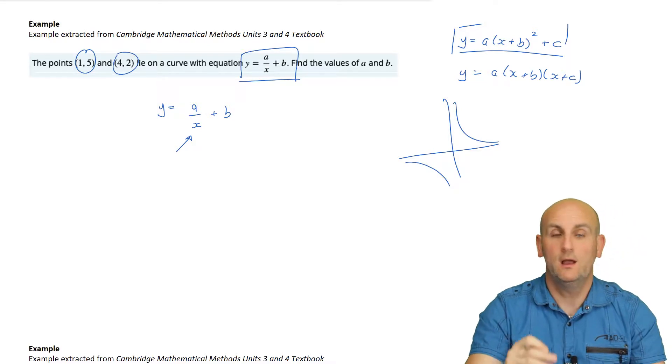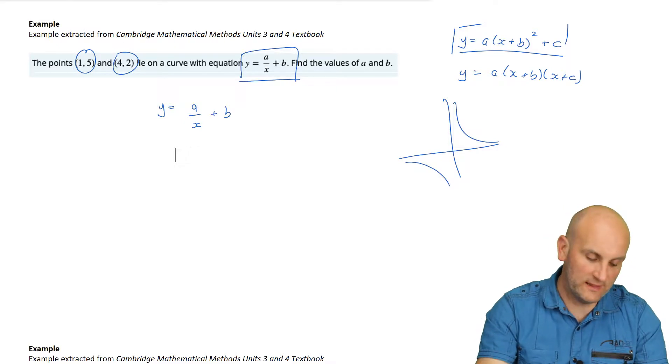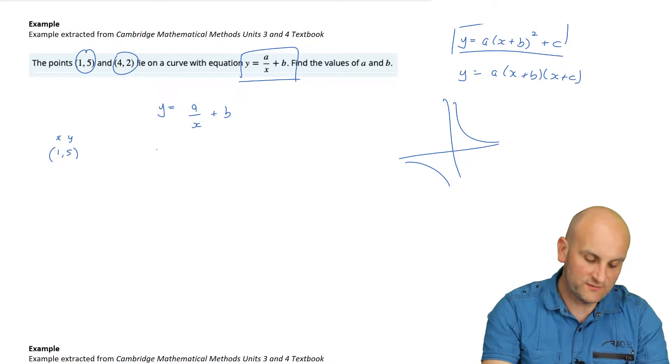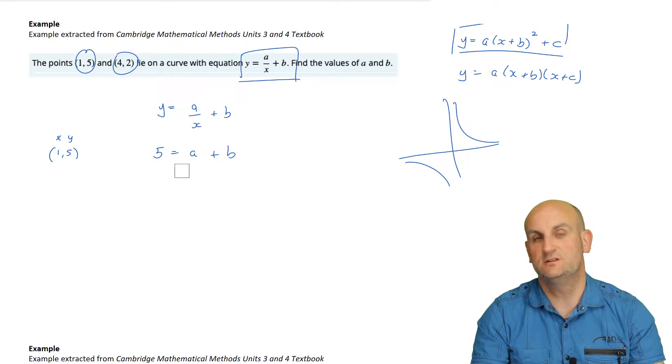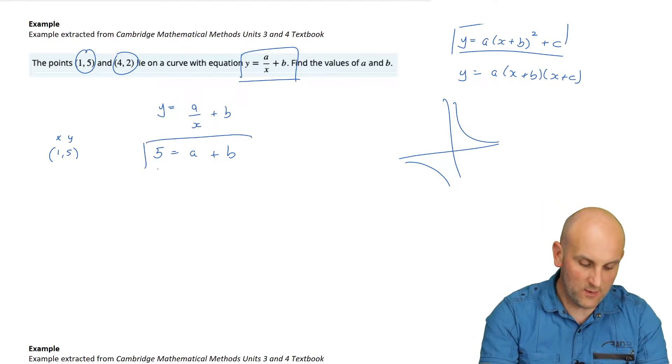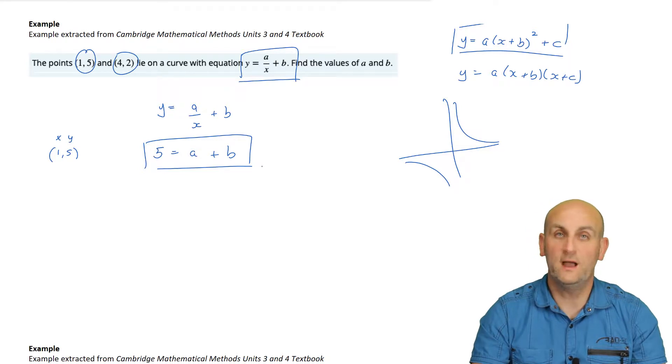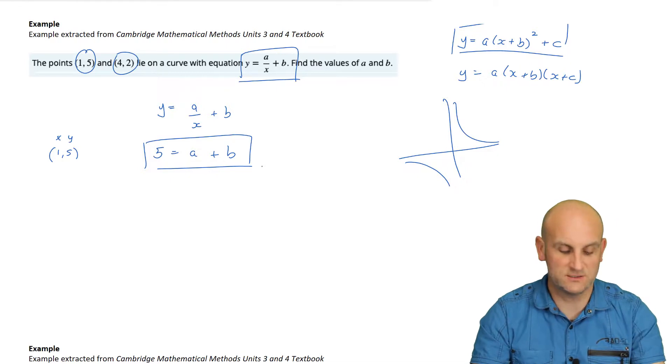So this is what I'm going to write down first: y is equal to a on x plus b. They're effectively saying, can you find the values of a and b, and write out the equation in that form. Now, before I even look at this equation, I know that because I've got the x on the bottom, what is its base graph? It is a hyperbola. Now, that might not be useful to this question at all, but it might. Let's see what happens. And they've given me two coordinates. Why have they given me two coordinates? Well, let's see what happens when I put that first coordinate in. So when I have the value of 1 comma 5, it means that x is 1 and y is 5.